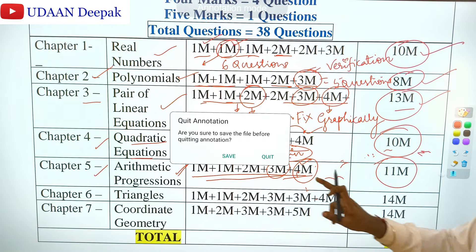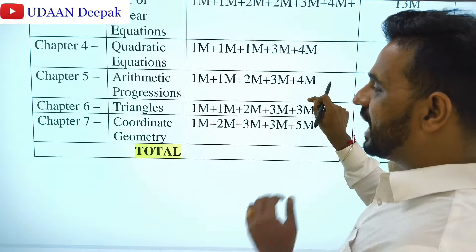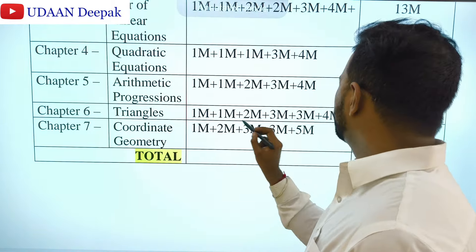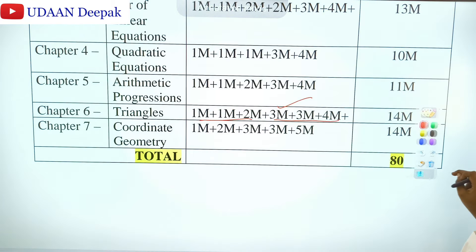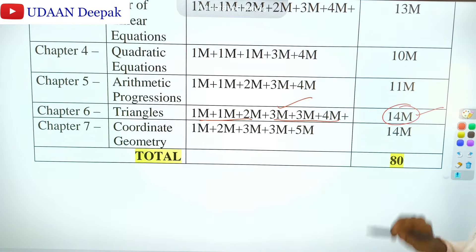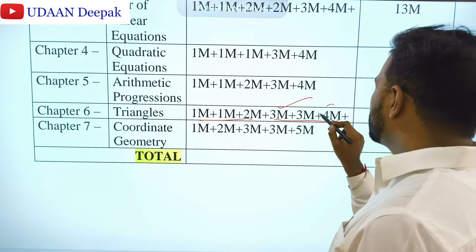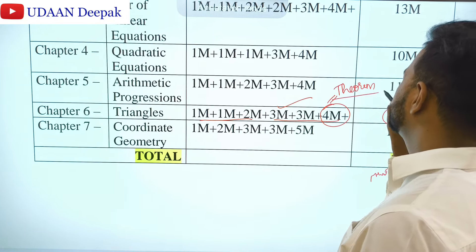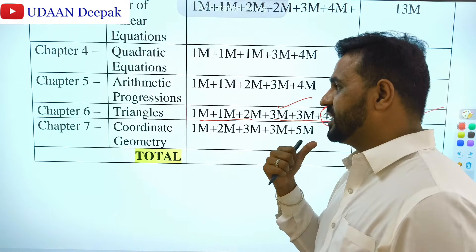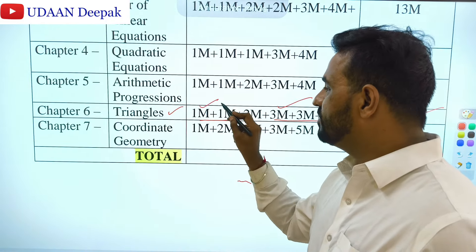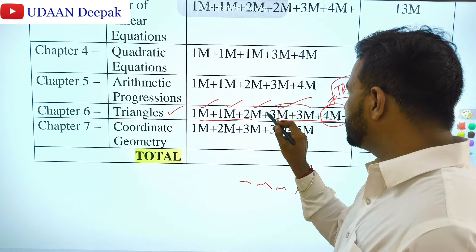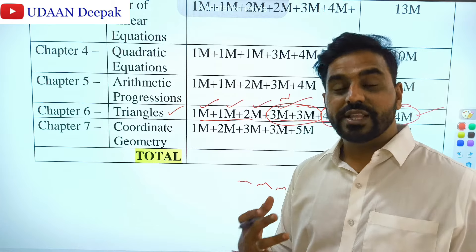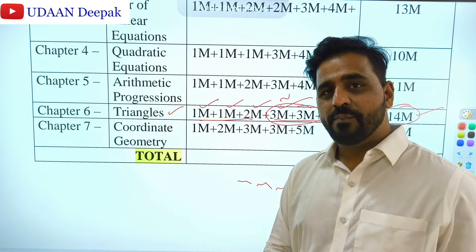Chapter 6 — Triangles — you can expect 6 questions for a total of 14 marks, the highest among all chapters. This is because the 5-mark theorem question — either Thales' theorem or the AAA theorem — comes from here. There is one objective, one 1-mark, one 2-mark, and one 3-mark question. In the 3-mark question, you will be asked to prove conditions for similarity given a figure. Trapezium problems are also important.